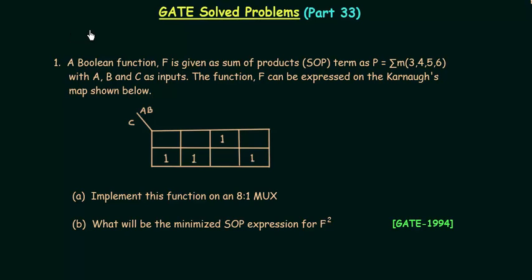In this lecture I will solve two combinational circuits problems from the GATE 1994 exam. In the first problem, a boolean function F is given as sum of products. These are the minterms m3, m4, m5, and m6 with A, B, and C as inputs.